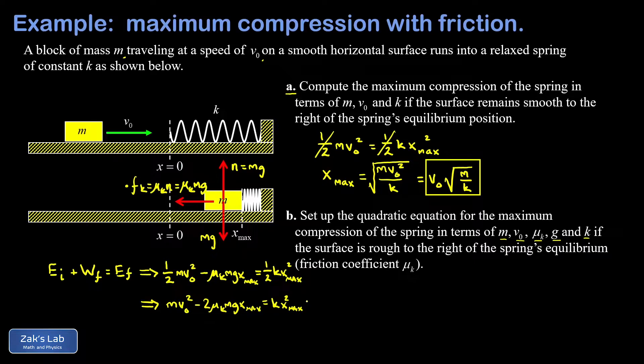Then I would like to express this as a sum of terms set equal to zero. And it's best if I have a positive coefficient on the quadratic term. So I'm moving all the terms to the right hand side here, and then I'll flip it around. That gives me k x max squared plus 2 μk m g x max minus m v0 squared. And that's all equal to zero.